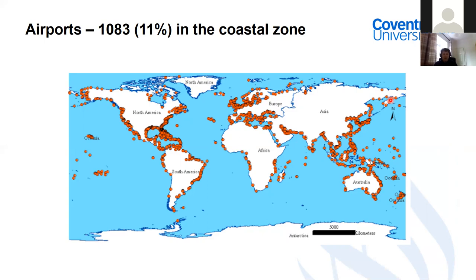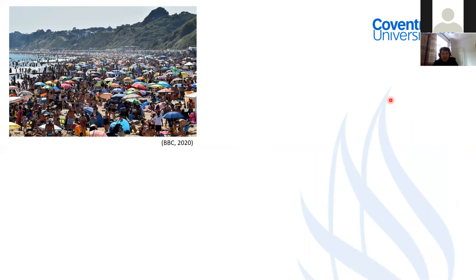So why do we love the coast? Why is there so much infrastructure and so many people there? Well, first of all we like to go on holiday there. I'm sure everyone watching this will have been on a coastal holiday. This is an example from almost a year ago at Bournemouth beach — as soon as lockdown restrictions were lifted, everyone went to the beach. The weather was nice and that was everyone's first thought: we'll go to the beach.